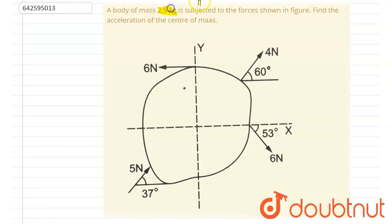So this is the body. You can see there are four forces acting on the body, right? So if I break the forces into components, this is 4 cos 60 degrees and this will be 4 sin 60 degrees, right?